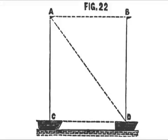Zetetic Astronomy. Earth Not a Globe. Section 2: The Earth — No Axial or Orbital Motion. If a ball be allowed to drop from the masthead of a ship at rest, it will strike the deck at the foot of the mast.